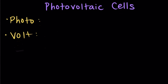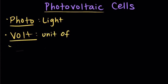And finally, one other way to harness the power of the sun is through photovoltaic cells. If we break down that big word, photo meaning light, and volt meaning a unit of electric force, then photovoltaic becomes using light to produce electric force.